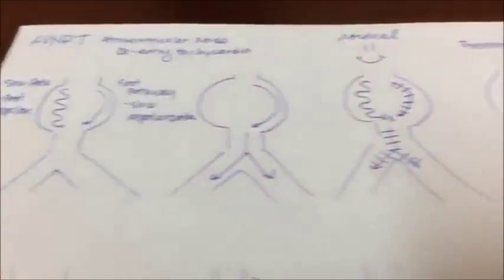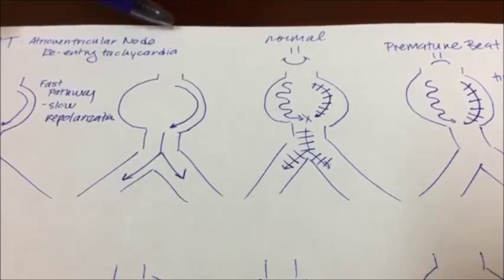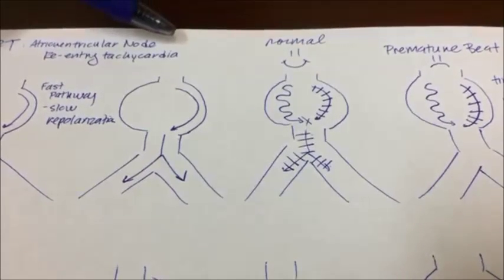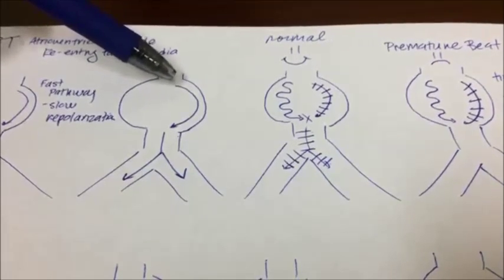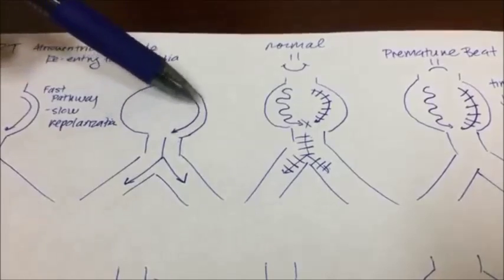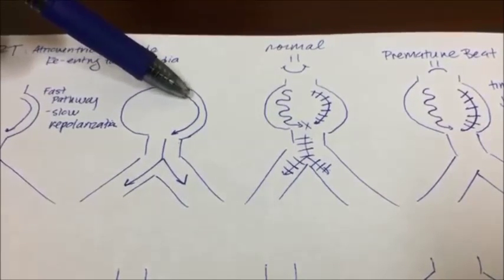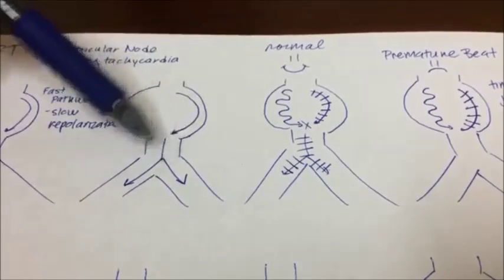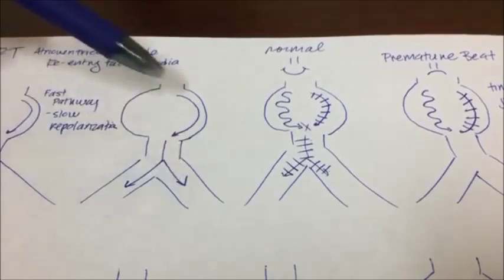So kind of jumping to a normal AV node. You got your SA node, discharges, setting a pace, comes down, comes down, comes down, hits the AV node. Once it enters the AV node, it will go down the fast pathway first. Not sure why, just does. So once it enters the fast pathway, comes down, depolarizes, hits the bundle and then depolarizes into the rest of the ventricle.